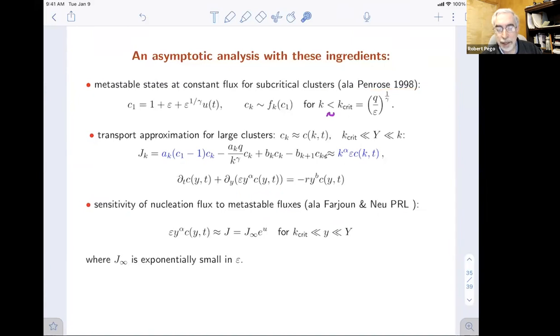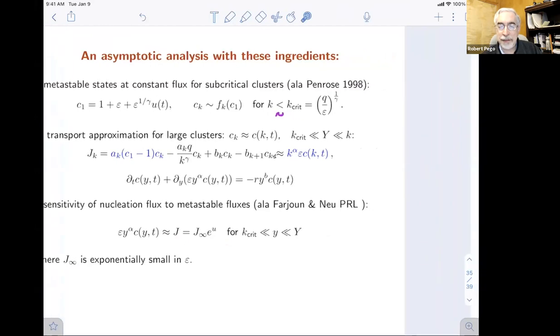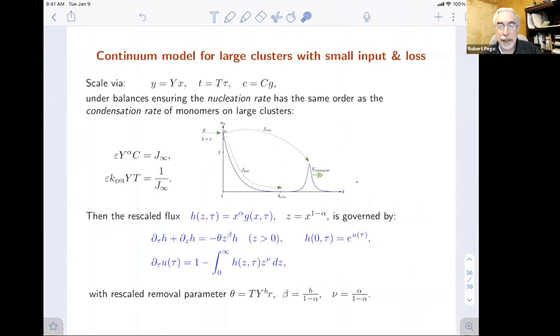The analysis we do here is related to an analysis of Yossi Farjoun and John Neu, who did it in the physical literature. It's related to Penrose's asymptotics. For that we're saying, near the critical size, the nucleation flux is approximately equal to this metastable flux. That's an exponentially small quantity J infinity multiplied by E to the U. In the right scaling, it's like E to the U. Exponentially small, but like E to the U. Those are the ingredients and it yields the following continuum model.